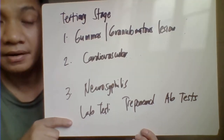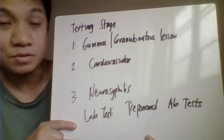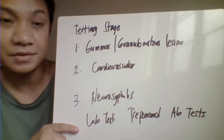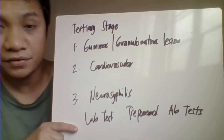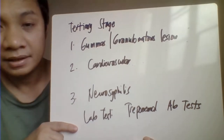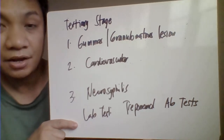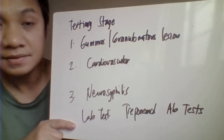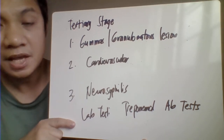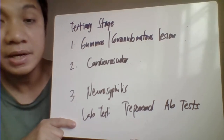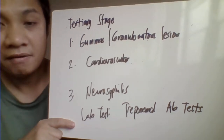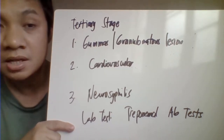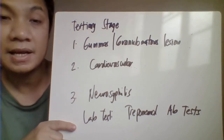The gummatous lesion represents the host immune response to the infection. The second manifestation involves the cardiovascular system — specifically the ascending aorta — characterized by destruction of elastic tissues. Manifestations include aortic aneurysm, thickening of valve leaflets resulting in aortic regurgitation, and angina pectoris.